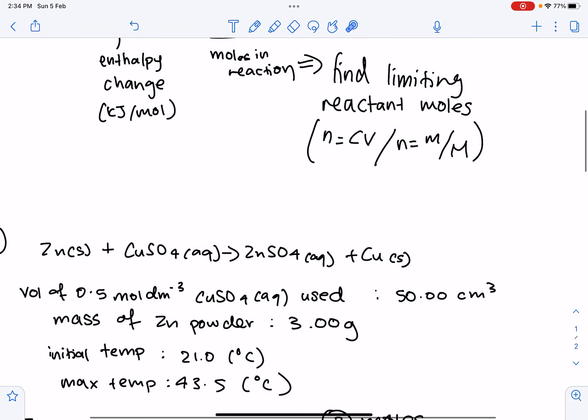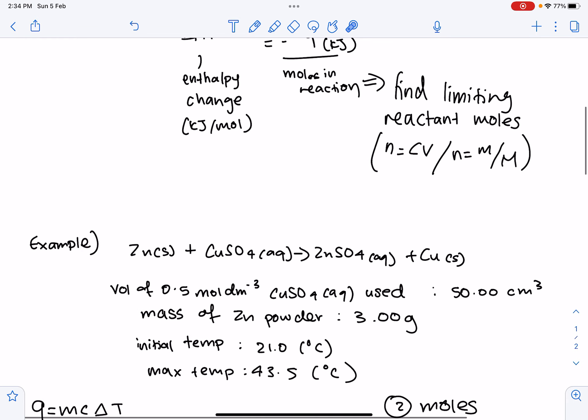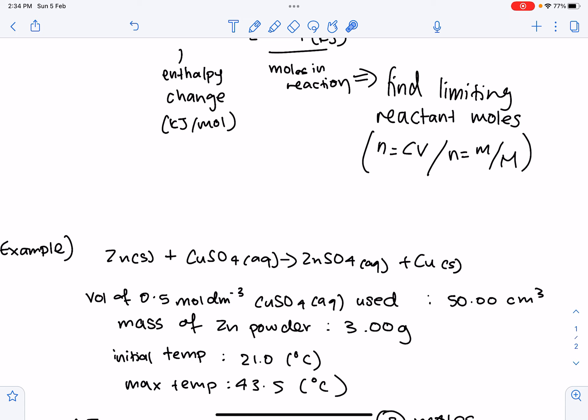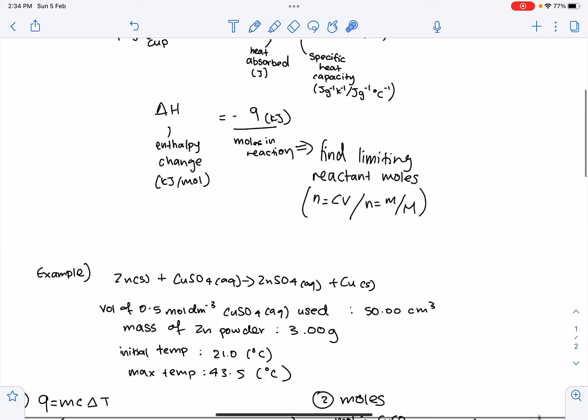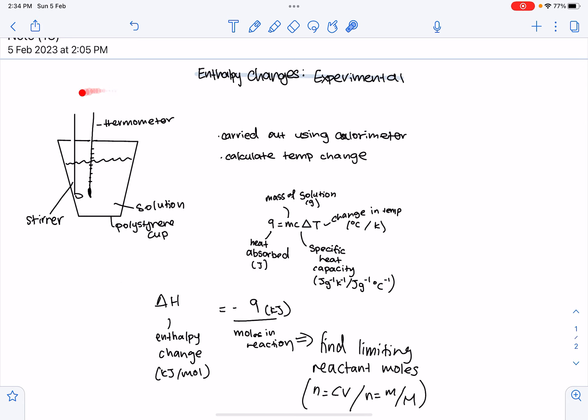So, let's look at a worked example to see how exactly we can calculate the enthalpy change. So, in this example, the equation we're looking at is zinc plus copper sulfate gives us zinc sulfate plus copper. So, the information we're given is that the volume of 0.5 mol per dm cubed of copper sulfate used is 50 cm cubed. Then, we look at the mass of zinc powder, which are given, which is 3 grams, the initial temperature, 21 degrees Celsius, and the max temperature, 43.5 degrees Celsius. So, the initial and max temperature are calculated using this calorimeter I mentioned above.